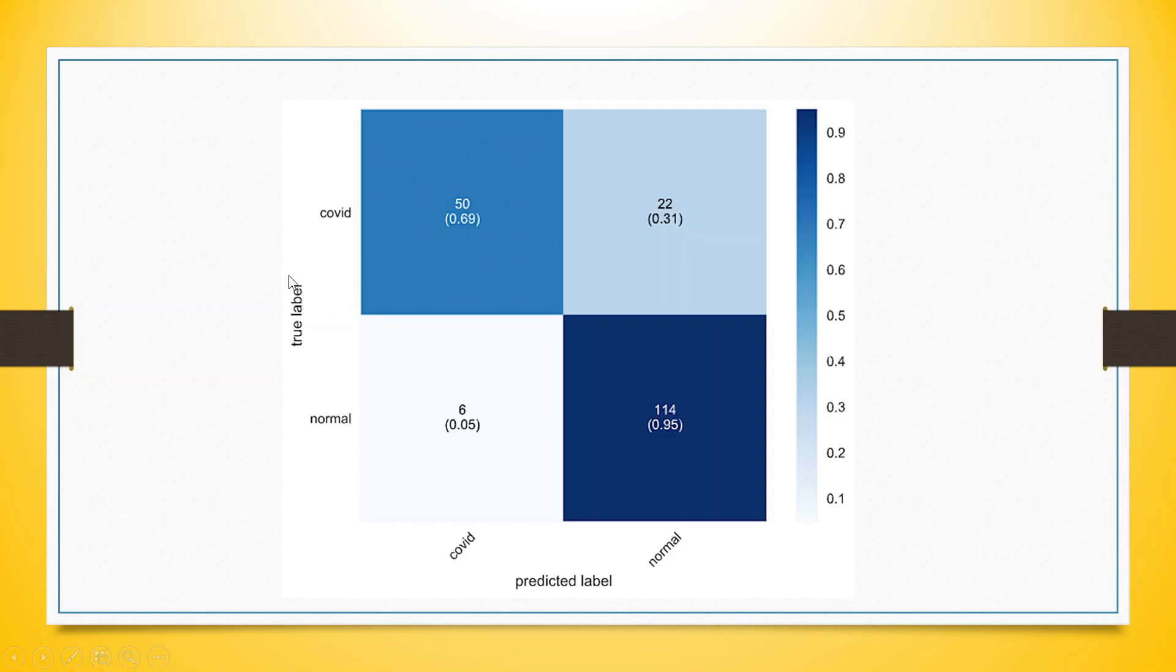Say for example, our original data consists of a person who is having COVID and the kit also detected that yes, the person is having COVID. So 50 are such cases where the kit worked successfully. In this case, the person is normal and the kit also detected that the person is normal, and that is 114 such cases. So the success is 50 plus 114, 164.